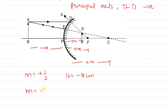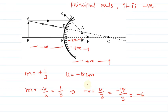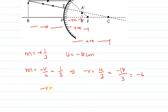Using the magnification formula: m equals minus v by u equals one-third. Substituting u equals minus eighteen: minus v divided by minus eighteen equals one-third, so minus v equals minus six, therefore v equals positive six centimeters. So the image distance is six centimeters.